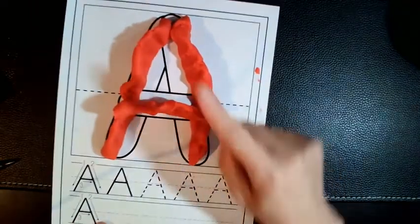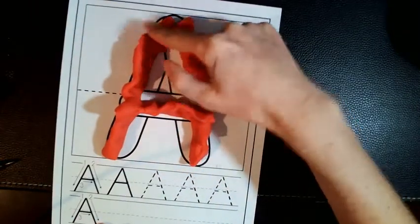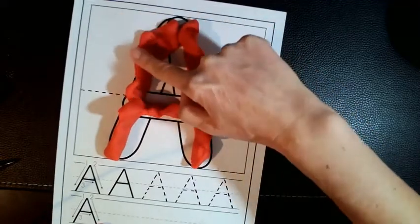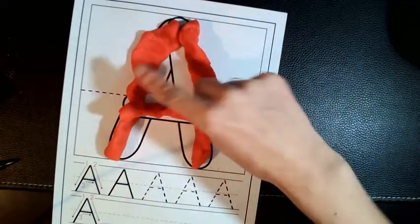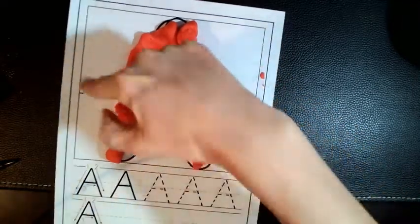Another activity that you can do with this is have them push it down. Push, push. This helps with finger isolation, so using only one finger at a time and also building the little muscles in their hands and arm.